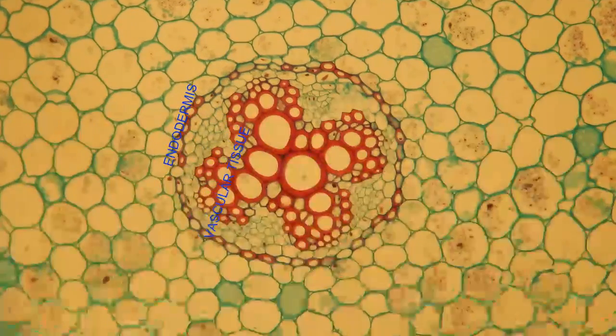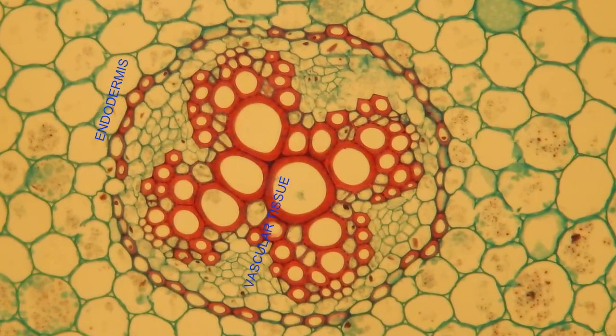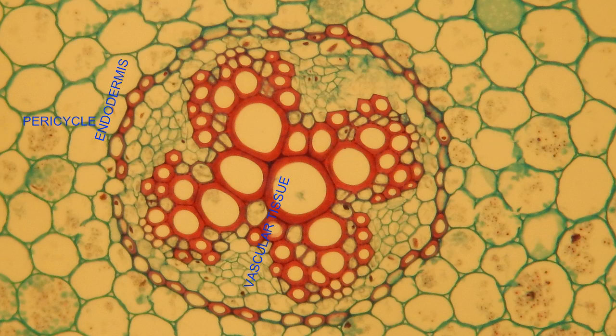The area just interior to the endodermis, but adjacent to it, is known as the pericycle. This area is the region from which lateral roots may be initiated.